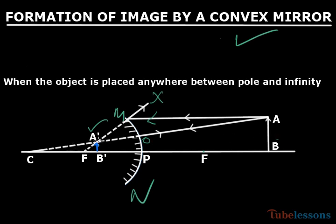So A'B' will be the virtual image of AB, and virtual means it is always erect. It is diminished. So the image is virtual, erect, and diminished.